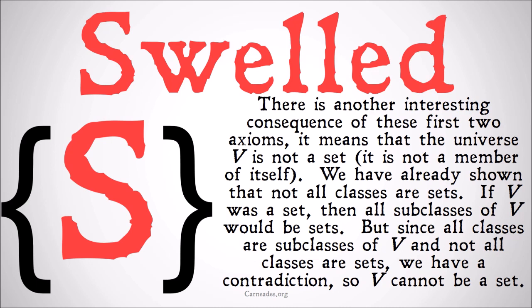Hopefully that makes sense. The specific class we're talking about is the class of all ordinary sets, which is the problematic one. If you want more information on that, go back and check the sets, classes, and Russell's Paradox video or some of the videos around there that dig deeper into those problems. Basically, V can't be a set because the subclasses of V would all have to be sets, but not all the subclasses of V are sets — some of them are only classes.